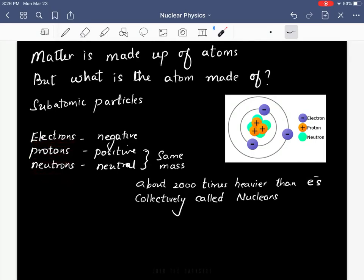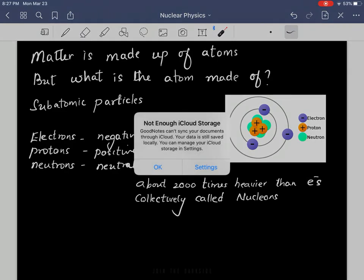Electrons are negatively charged, protons are positively charged, and neutrons are neutrally charged. Protons and neutrons are collectively called nucleons.